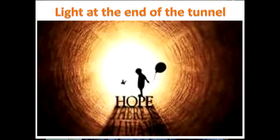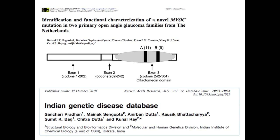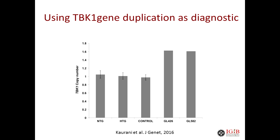That directly demonstrates the relevance of doing this kind of study in our own population. There is hope at the end of the tunnel. We have also shown functional ways of characterizing these mutations from different populations of the world, and colleagues have published a large database of genetic variations and mutations, which is a gold mine for identifying mutations relevant to our population for particular diseases. Recently we also published a gene duplication as a diagnostic marker for glaucoma.